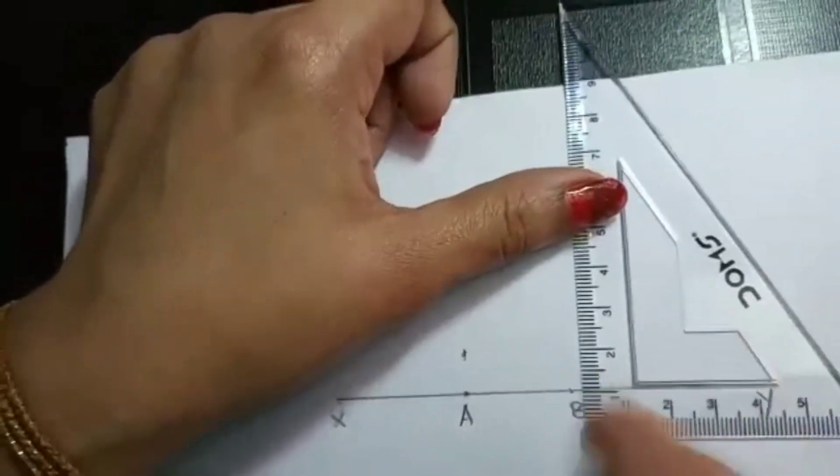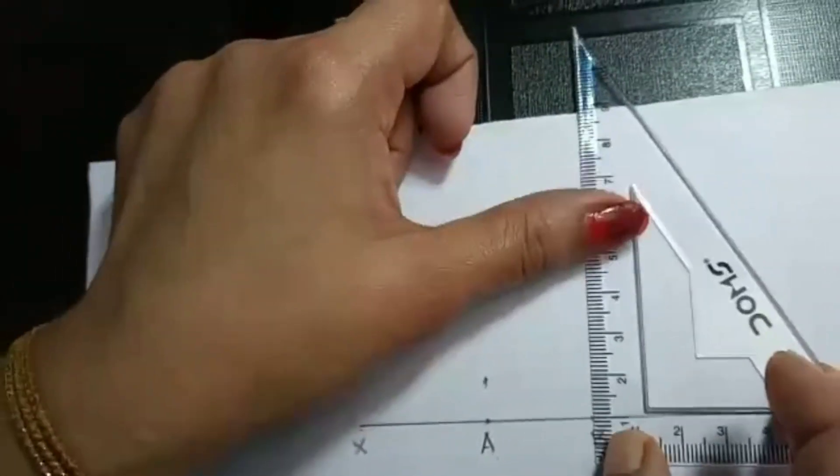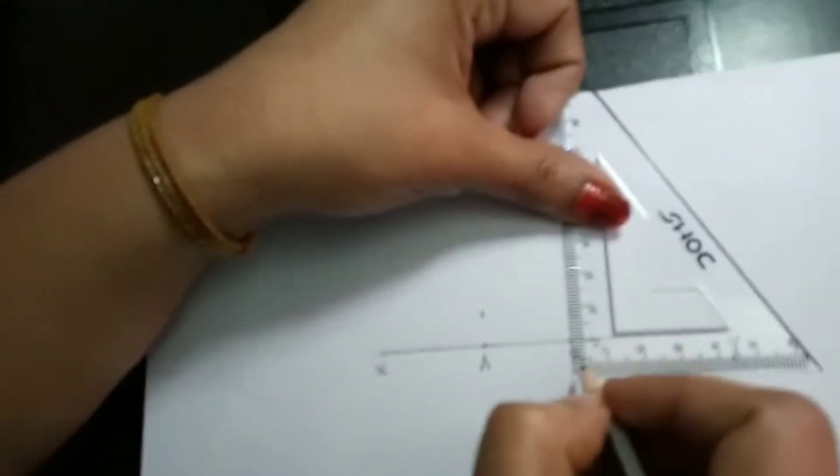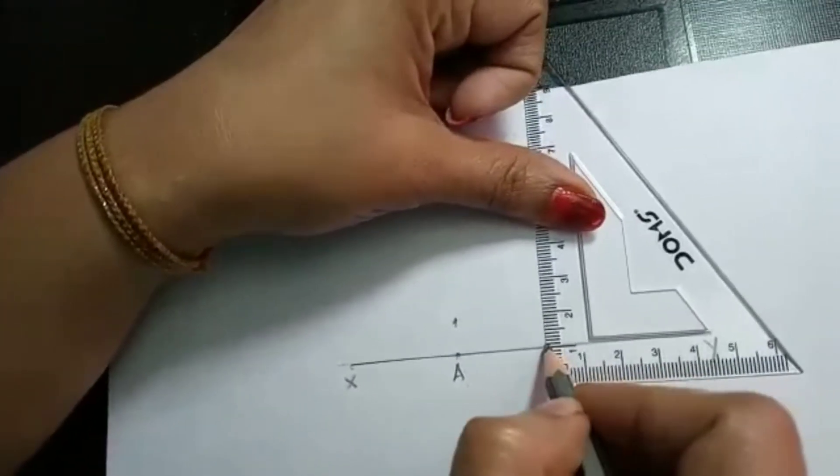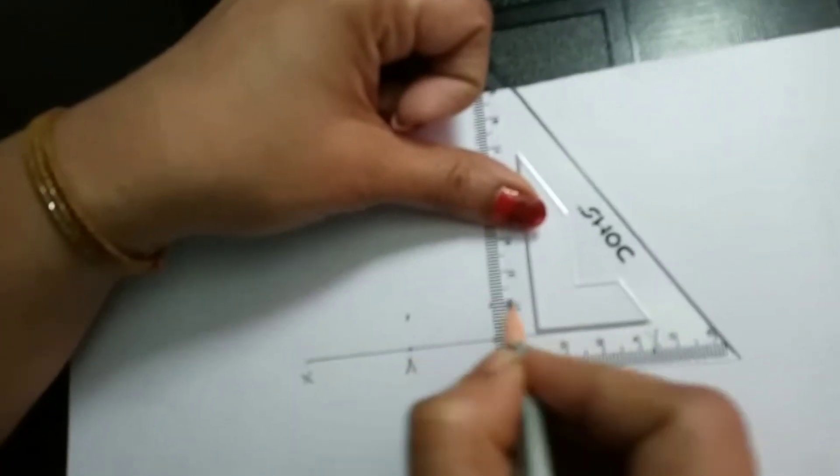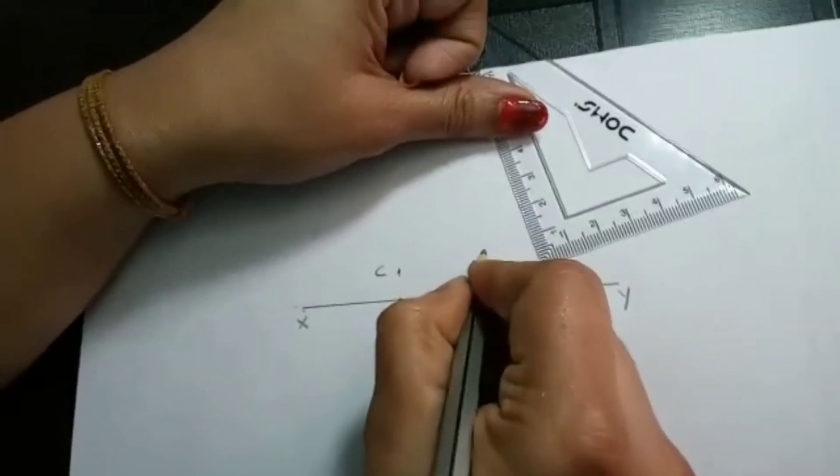And here on my B, again I am just keeping my ruler at 1. It should be fixed, it should not slip. So here again you can just count 1 cm. Just mark the point. So this is my point C and this is my point D.